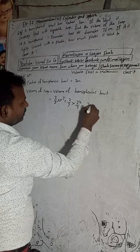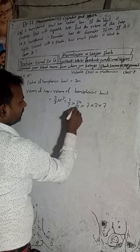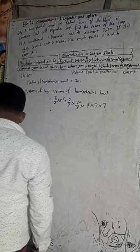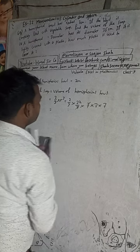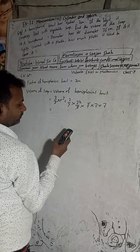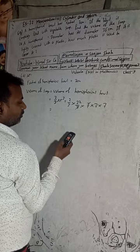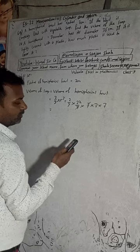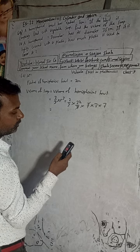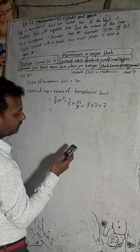So r cubed means 7 × 7 × 7. The 7 in the denominator cancels with one factor of 7, leaving 7 × 7 = 49. Then we compute 49 × 44 ÷ 3, giving us 49 × 44 divided by 3.